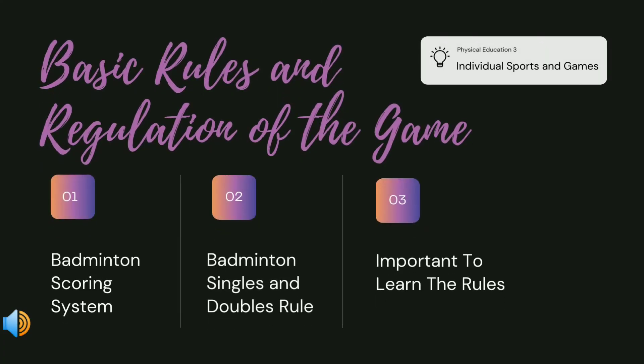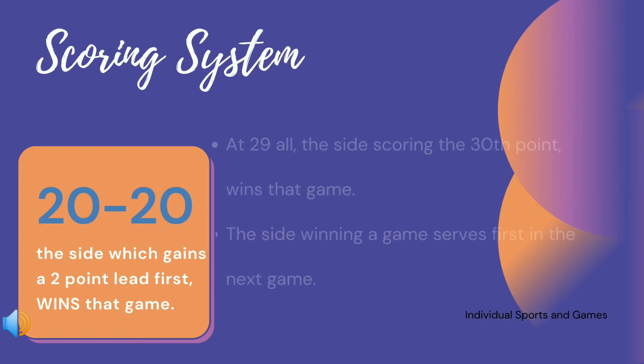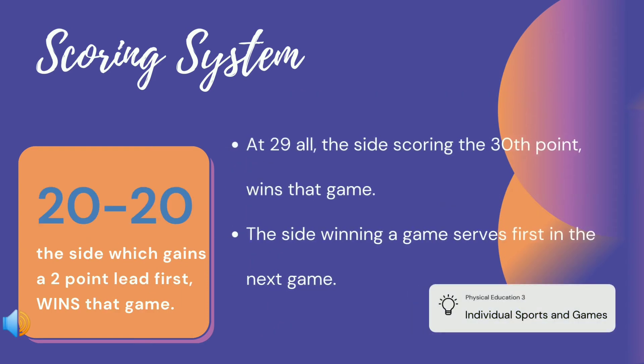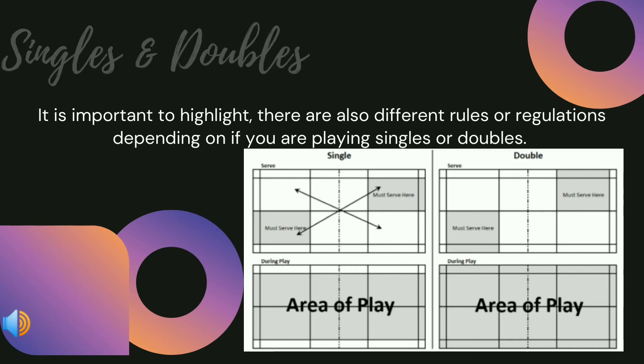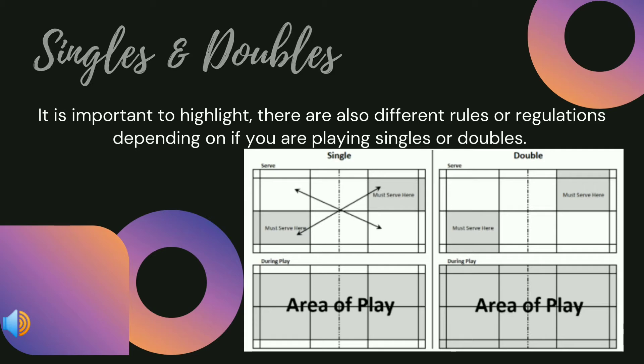For the basic rules and regulations of the game, starting with the scoring system: a badminton match consists of three games, and the person or team who wins the best out of three games wins the match. The same rules of scoring apply for both singles and doubles, and the side which gains a point lead first to 21 wins the game.